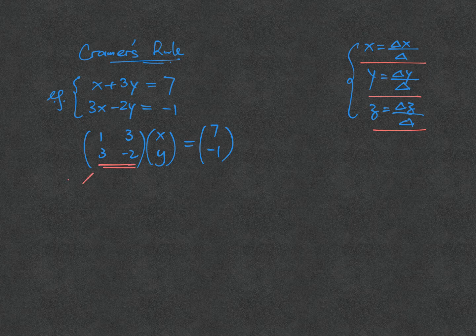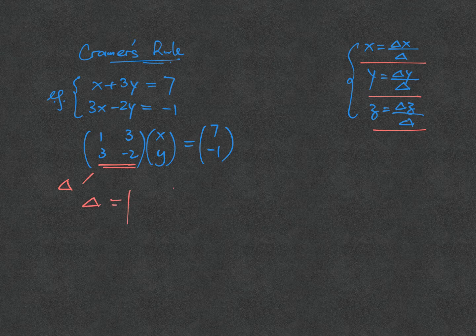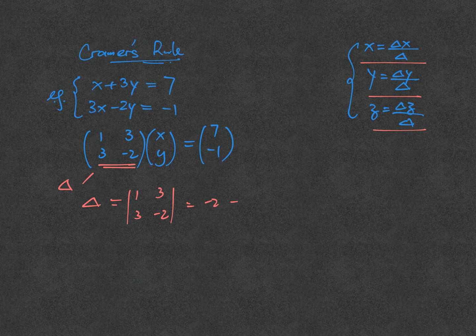The meaning of delta is the determinant of this matrix. Delta is the determinant of 1, 3, 3, minus 2, which gives you minus 2, minus 9, which is minus 11. This is the meaning of delta.